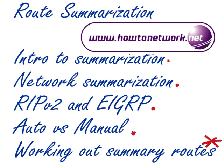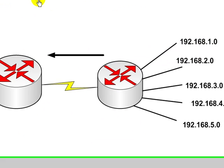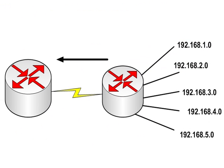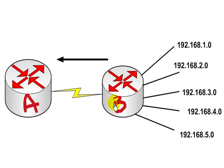Alright, so let's pull up a diagram and start talking about the whats and whys and wherefores. We have a network here — let's say it's your network. We've got router A and router B, and this is your network for your employer.